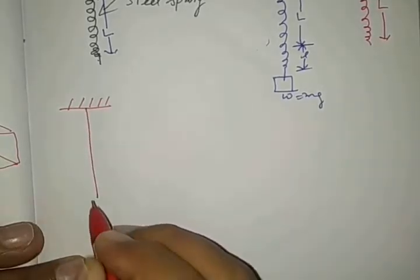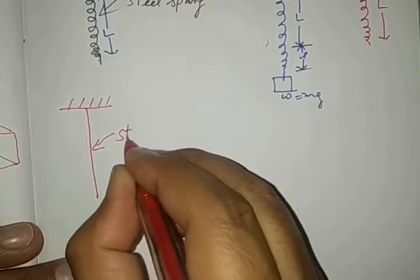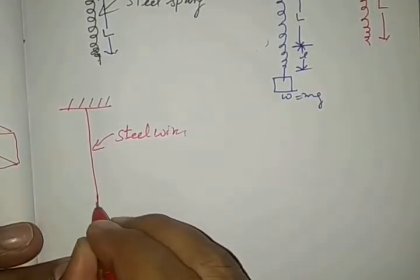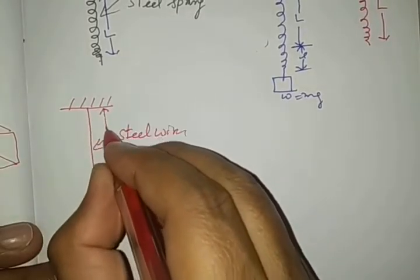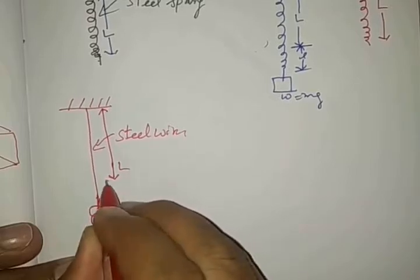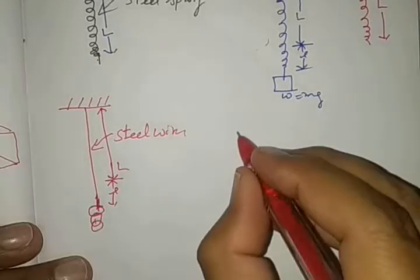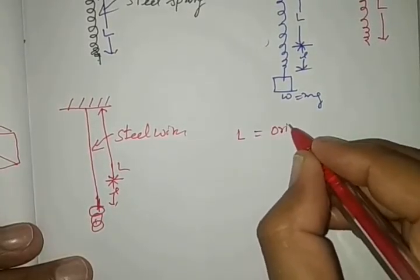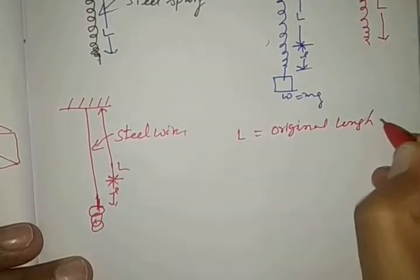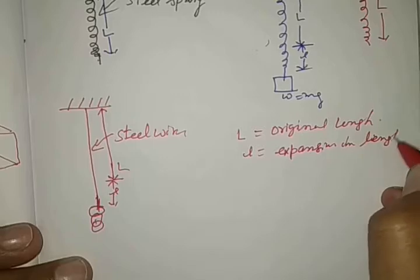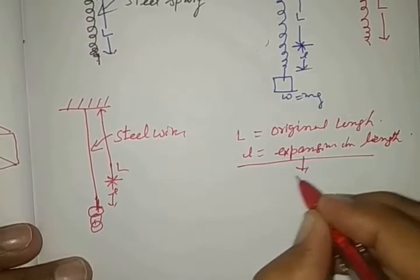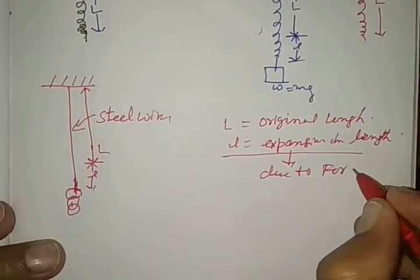This type of property is also exhibited when we take steel wire. When we suspend it by the weights and we gradually increase the weight, if its original length is L, then its length also elongates. L in both examples is the original length, and L dash is the expansion, and this expansion is due to force or weight.